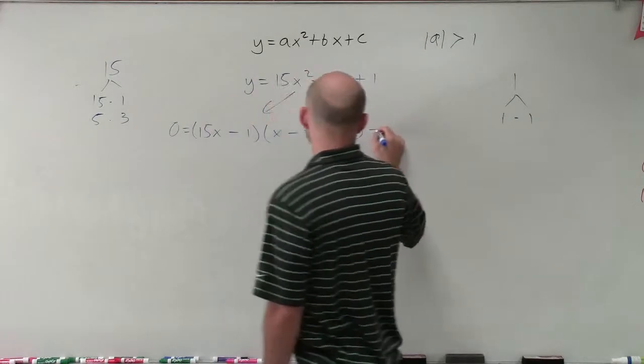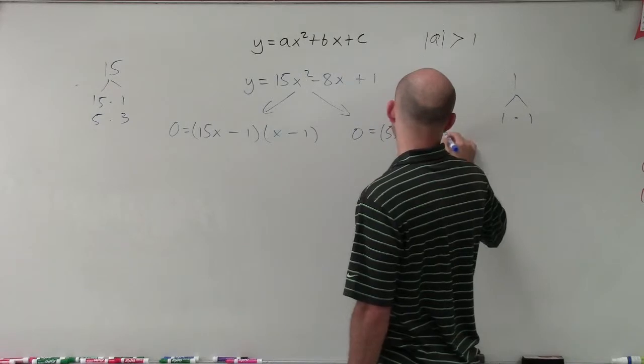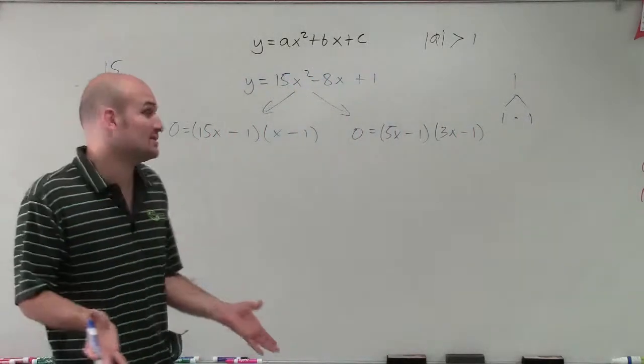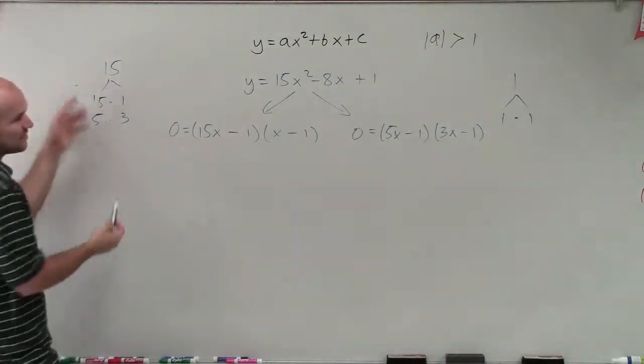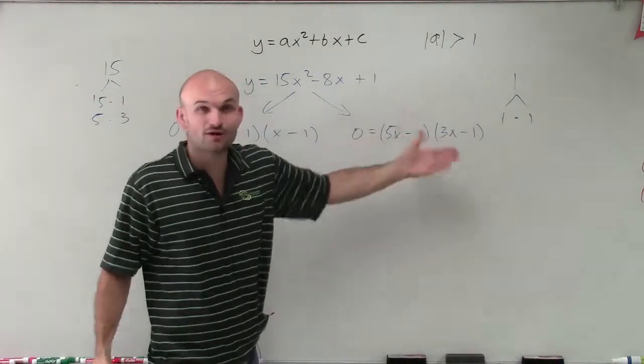Or I could do 0 equals 5x minus 1 times 3x minus 1. And those are really my only two possibilities I have to factor these. My first two terms have to give me 15x squared. These are the only combinations I have for them.